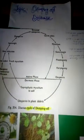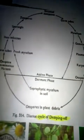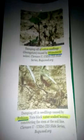That's the damping off disease — its cycle, several stages, types, and symptomology, the species that cause the disease, and management of the disease.